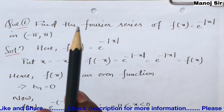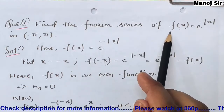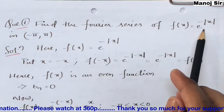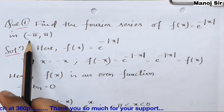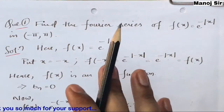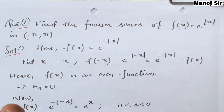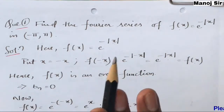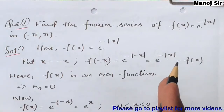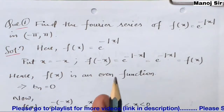The given problem says: find the Fourier series of the function f(x) = e^(−|x|) in the interval minus pi to pi. Nowhere in the given problem is it stated whether this is an even function or odd function — that is what we need to determine.